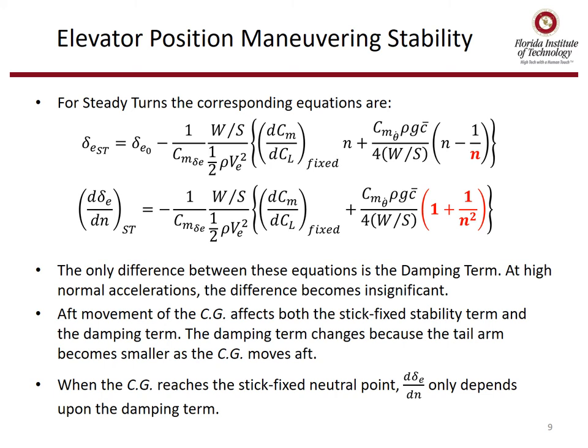Now let's look at the equations when we roll into a bank and do a steady turn. The only difference between these equations and the previous pull-up equations is what multiplies the second damping term inside the brackets. We also see that aft movement of the CG affects both the stick-fixed stability term and the damping term. The damping term changes because the tail arm becomes smaller as the CG moves aft — think of a fly swatter: a long arm damps well, but shortening the arm gives less damping.